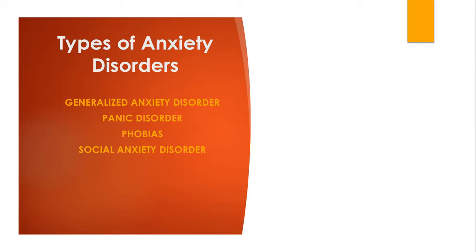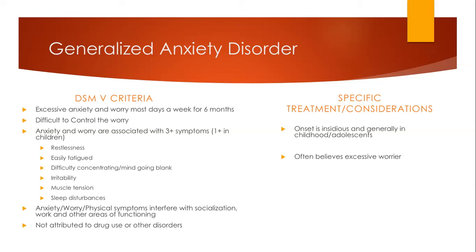Generalized anxiety disorder is the main type of anxiety that a lot of people experience. Based on the DSM-5, the criteria has to occur for most days for about six months and is often excessive worrying or anxiety. Some people may call these individuals 'worry warts' or they may always seem anxious about something but don't necessarily know what the cause of that anxiety is. It's often difficult for them to control their worry, and they need to have at least three of the following symptoms.